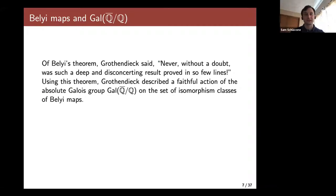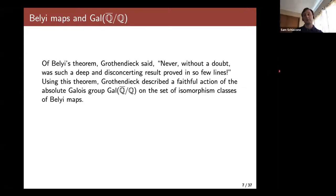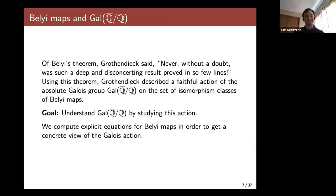Grothendieck was really impressed by Belyi's theorem and said, 'Never without a doubt was such a deep and disconcerting result proved in so few lines.' Using this theorem, Grothendieck described a faithful action of the absolute Galois group of Q on the set of isomorphism classes of Belyi maps. The absolute Galois group of Q is arguably the most important group in algebraic number theory, so any tool to study it is of immense importance. Our goal is to understand it by studying this action — taking a very computational, explicit perspective and computing equations for Belyi maps.